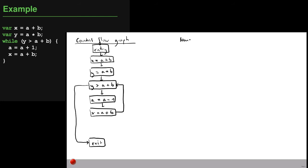For our example program, we look at the non-trivial expressions that actually occur in the code, since those are the only relevant ones. There are three: a+b, which occurs in three different places; a*b, which is computed once; and a-b — wait, actually a minus one appears in the loop. These three expressions are what we care about in this available expressions analysis.